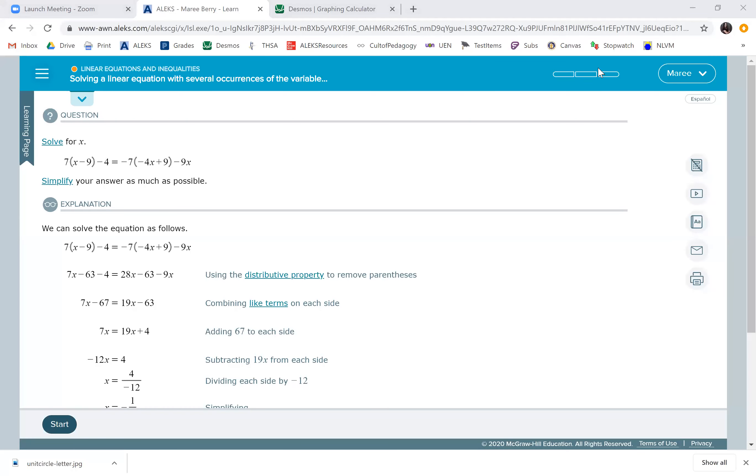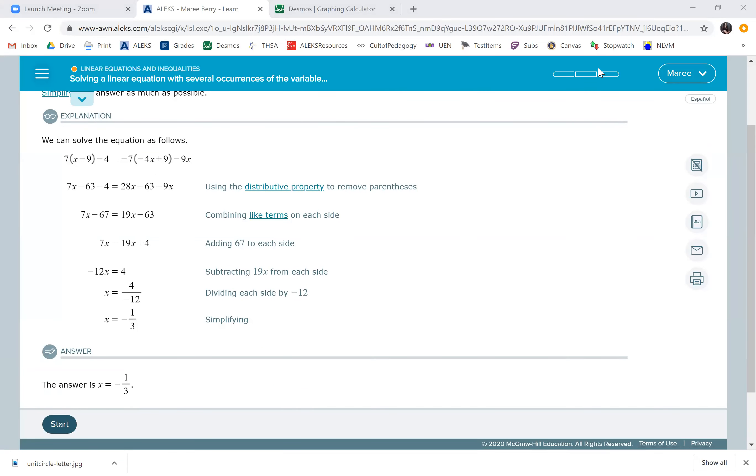In this topic, we're going to be solving equations where there are variables on both sides with multiple distributions. The first step is to use the distributive property on both sides or as many times as you see them. That's number one: use the distributive property to remove the parentheses.